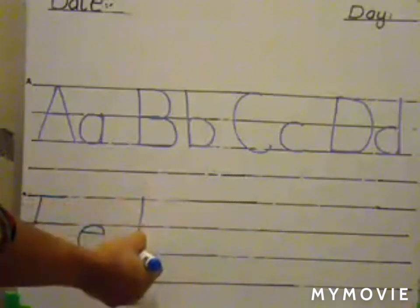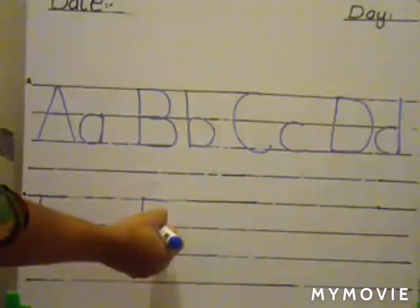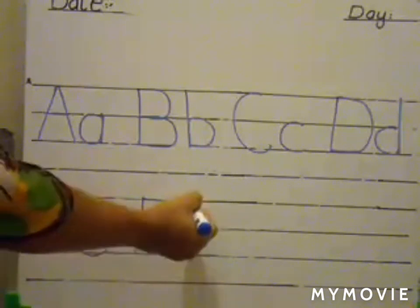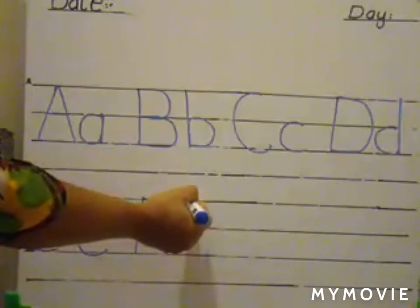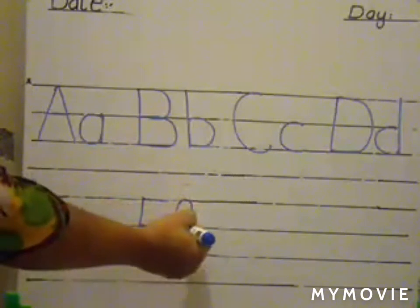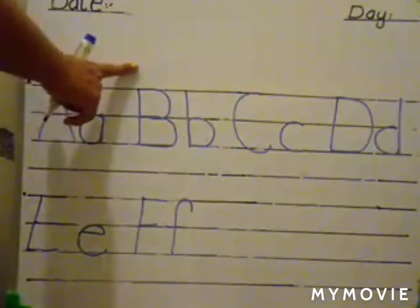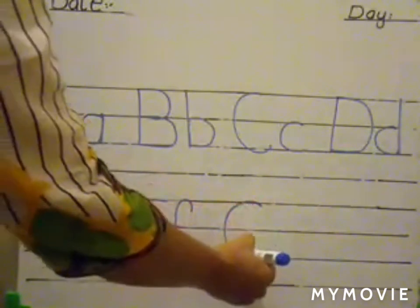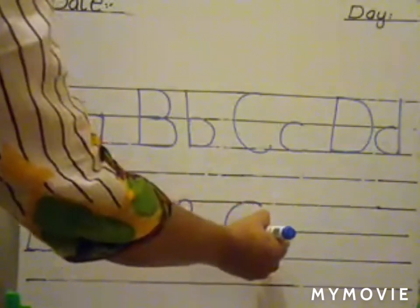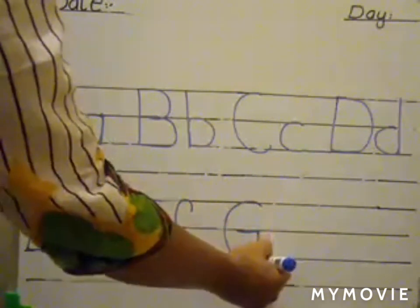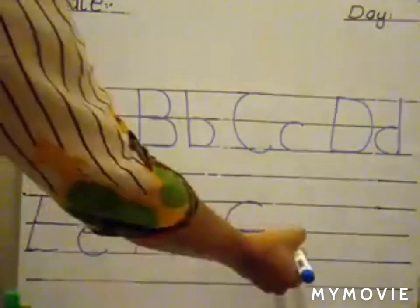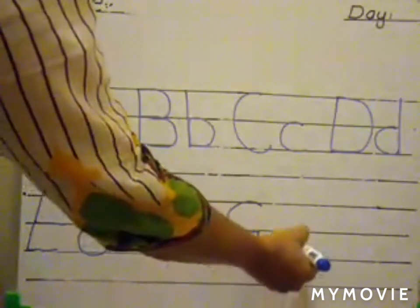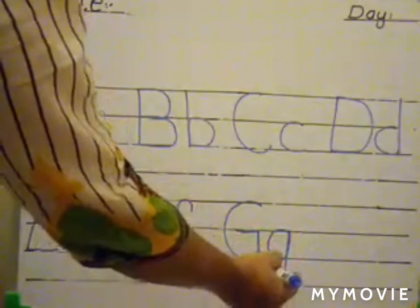What comes after E? F. Uppercase F. Now we are going to write lowercase F. Good. A, B, C, D, E, F. And now G. Uppercase G. And lowercase G.